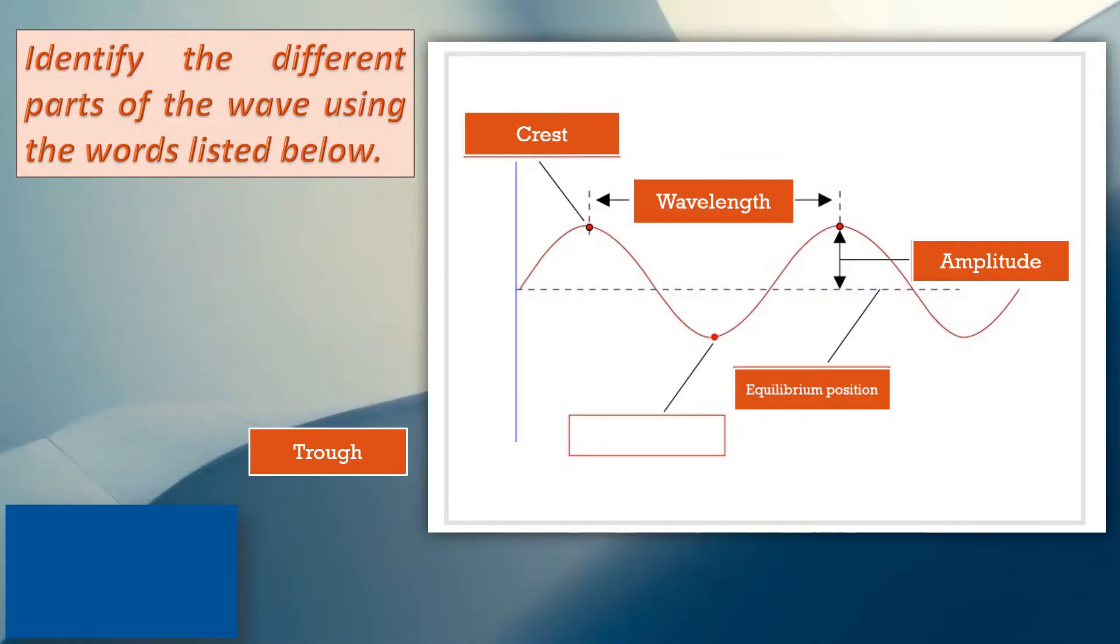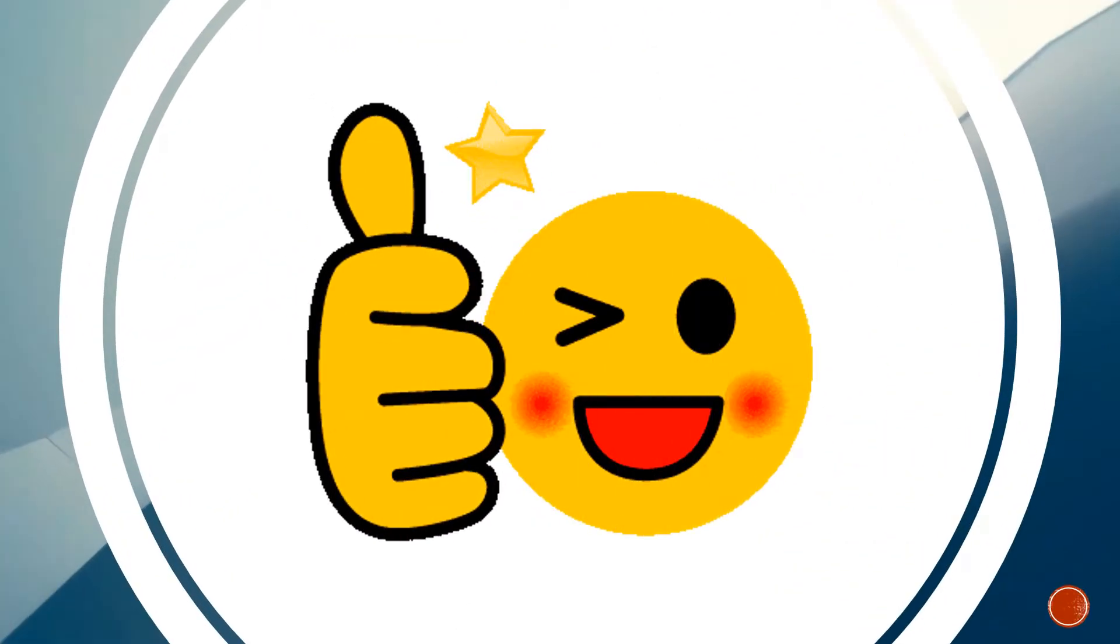Then, the equilibrium position, represented by the horizontal line in the middle of the wave. And finally, we have trough, the lowest point of the wave. Good job, learners!